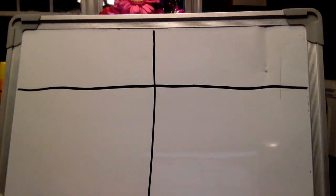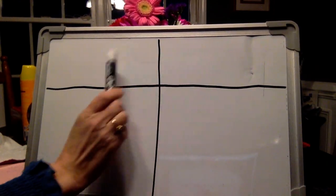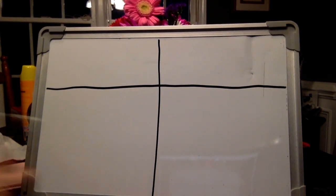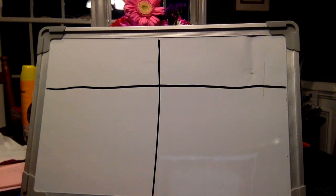All right, remember that the first step you need to do is to draw yourself a four-square. If you notice, the top of my two squares aren't as big as my bottom two squares, just because I need more room down here. But you can make all of your squares the same size as you want.